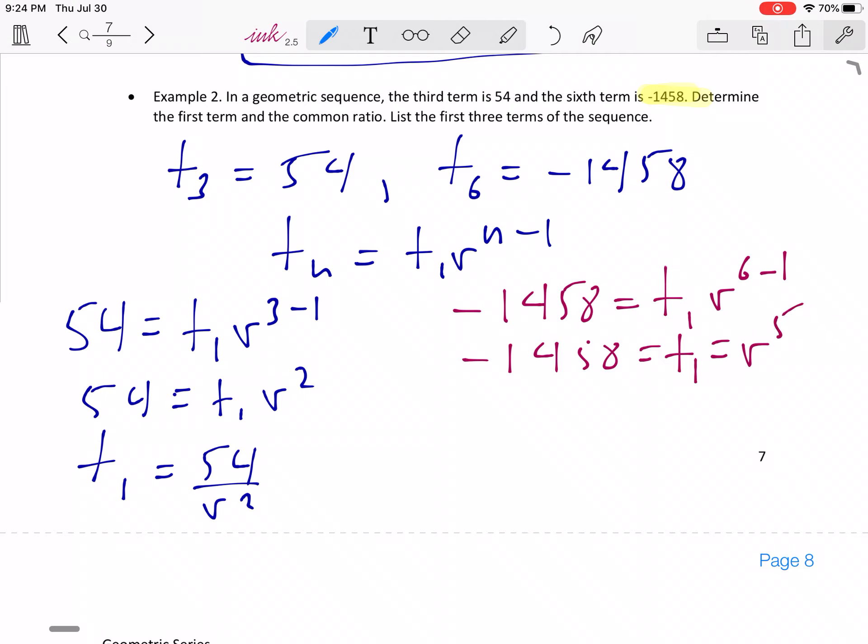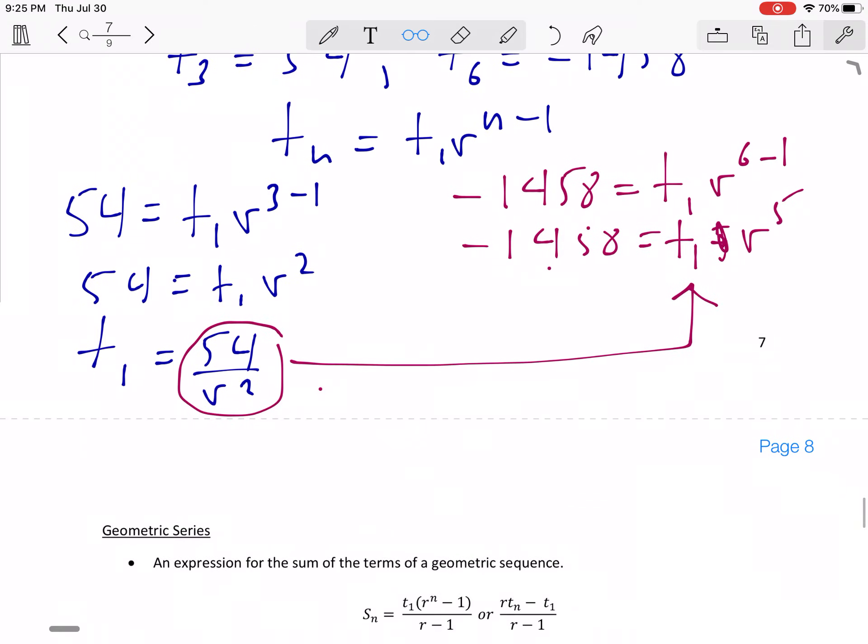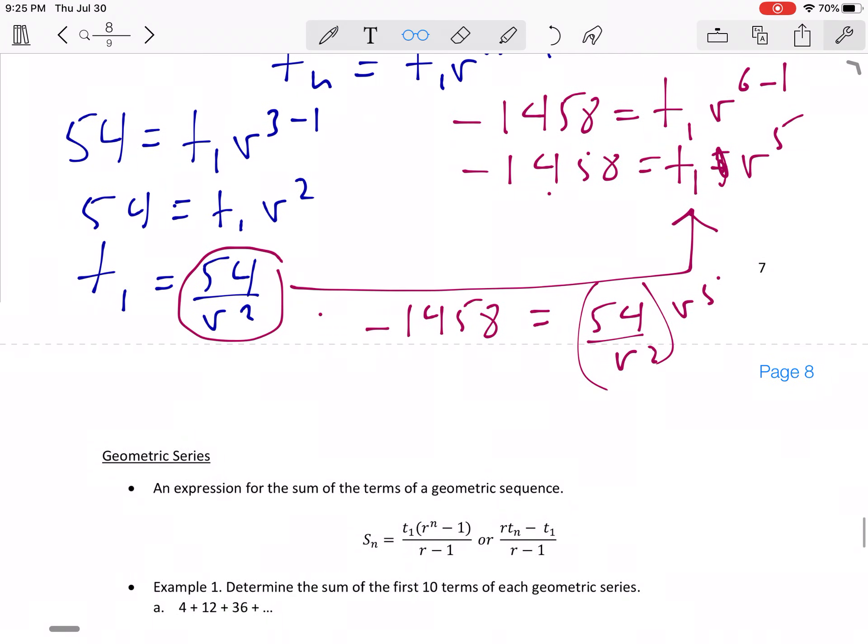So now what you can do, this is called a substitution. You did this, what you can do here is you can use substitution. This is T1 and so what we're going to do is we're going to put that in for T1 of the other equation. It doesn't have to be this way, you could have done the reverse. And so that's going to give you negative 1458 is equal to 54 over R squared times R to the power of 5. And so this is going to be negative 1458 equal to 54 R cubed.